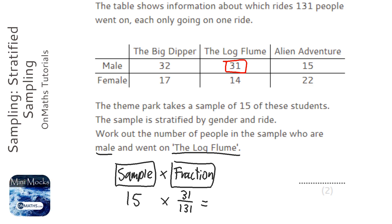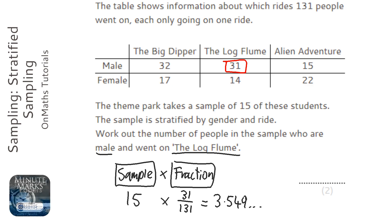With the calculator, I'm going to do 15 times 31 over 131. That gives me 3.549... and the important thing to realise is you can't have half a person, so you need to round that — I'm going to round that to 4.